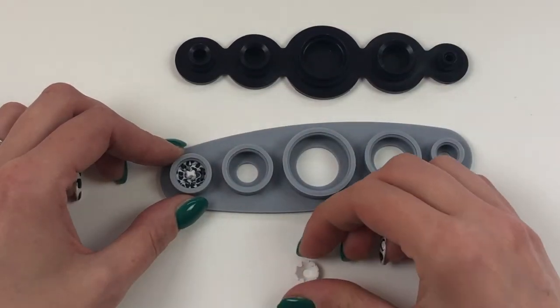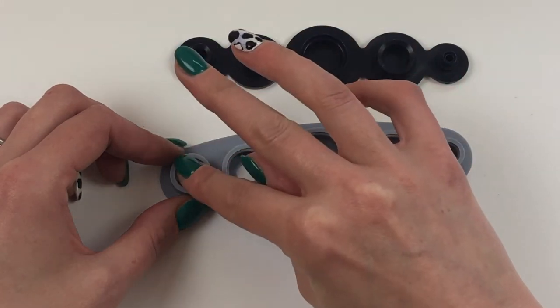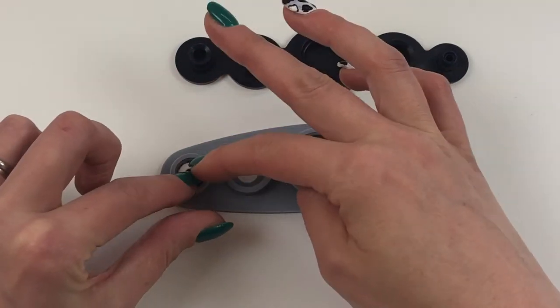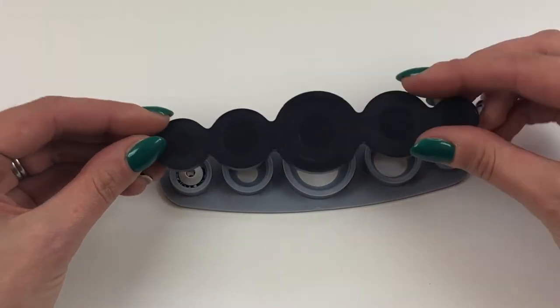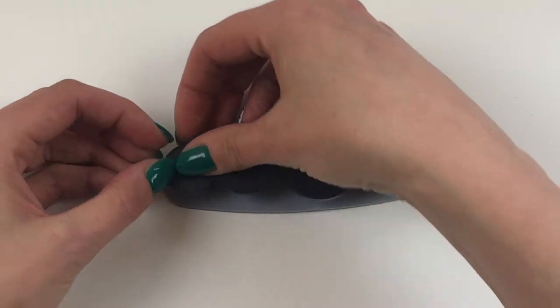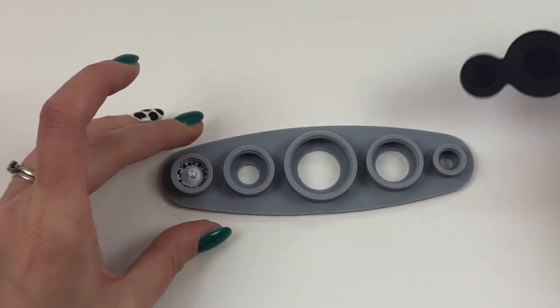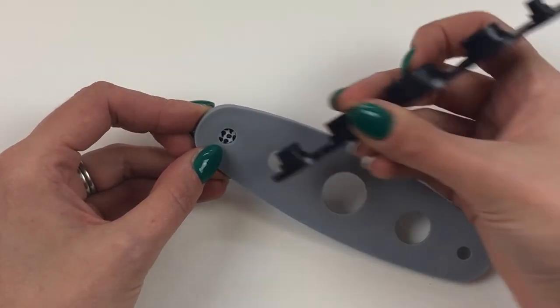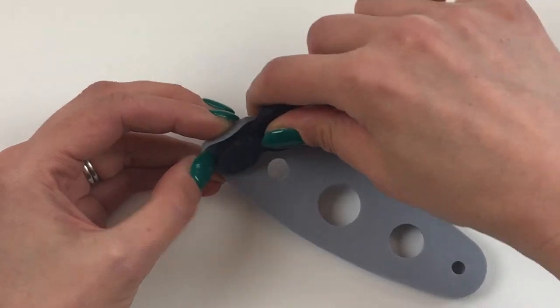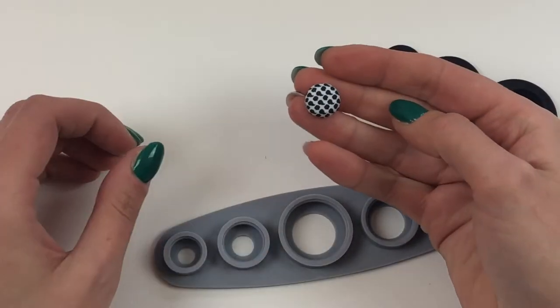Once you're happy that that's all folded in, take the back section and position it over the top of the fabric and then take the hard plastic part, turn it over and push hard to push the back into place. And then simply turn that over, push that out or use one of these to push your button out for you and there you go.